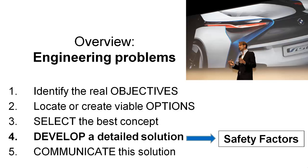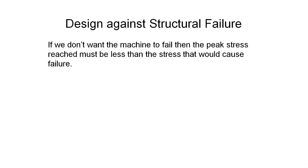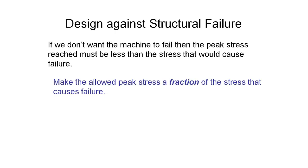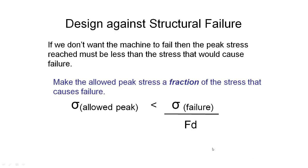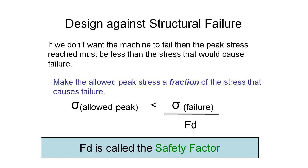We can then communicate our detailed designs through engineering drawings. Safety factors are used to help us design against structural failure. If we don't want a particular machine or device to fail, we need to ensure that the peak stresses are less than the stress that will cause it to fail. What we want to do is make our allowed peak stress some fraction of the stress that would cause failure. Our allowed peak stress has to be less than the stress required to fail our component divided by FD, where FD is our safety factor. We're going to explain how to come up with your own safety factors for your designs.